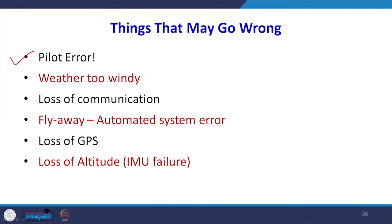Things that might go wrong when flying and collecting data include pilot error, unsupportive weather, and loss of communication between the ground control station and the drone. Automated system errors, fly-away events, loss of GPS, loss of real-world coordinates, loss of altitude, and IMU failure are also risks. These are all electronic systems that can go wrong while collecting data, and they must be considered. Thank you very much.